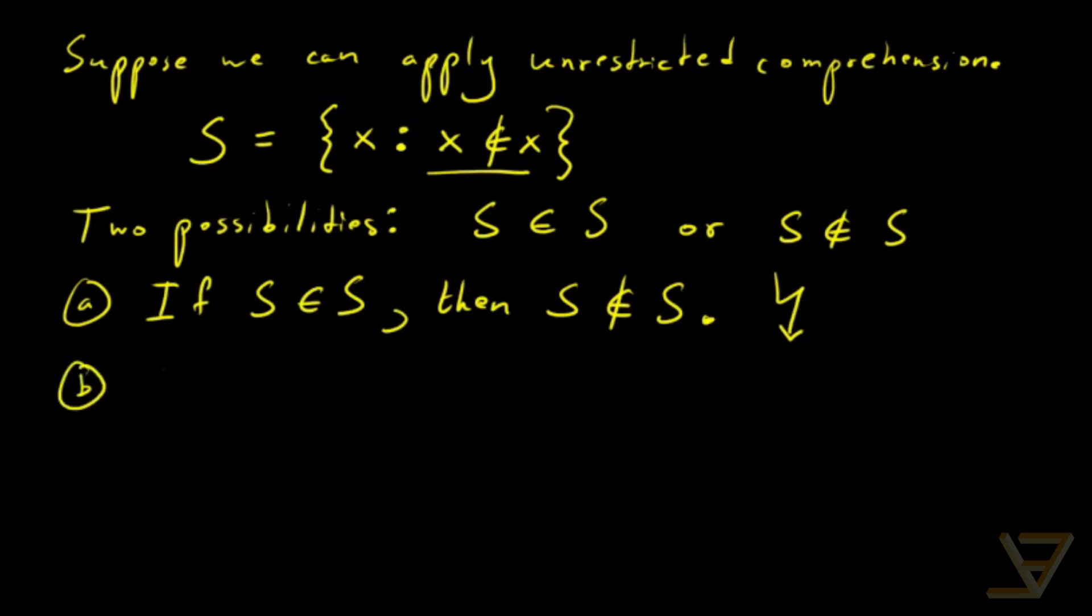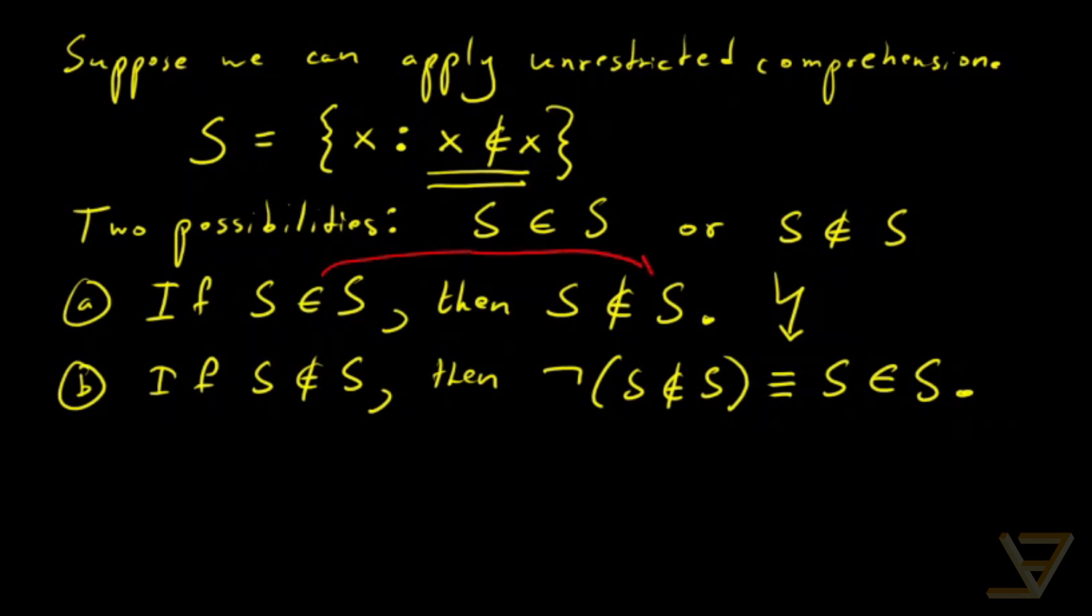If S is not an element of S then this condition is fulfilled. So we have S is not an element of S which is logically equivalent to S is an element of S. If S is an element of S then we get that S is not an element of S which is its negation. And if S is not an element of S then we get that S is an element of S. Once again that's a contradiction.